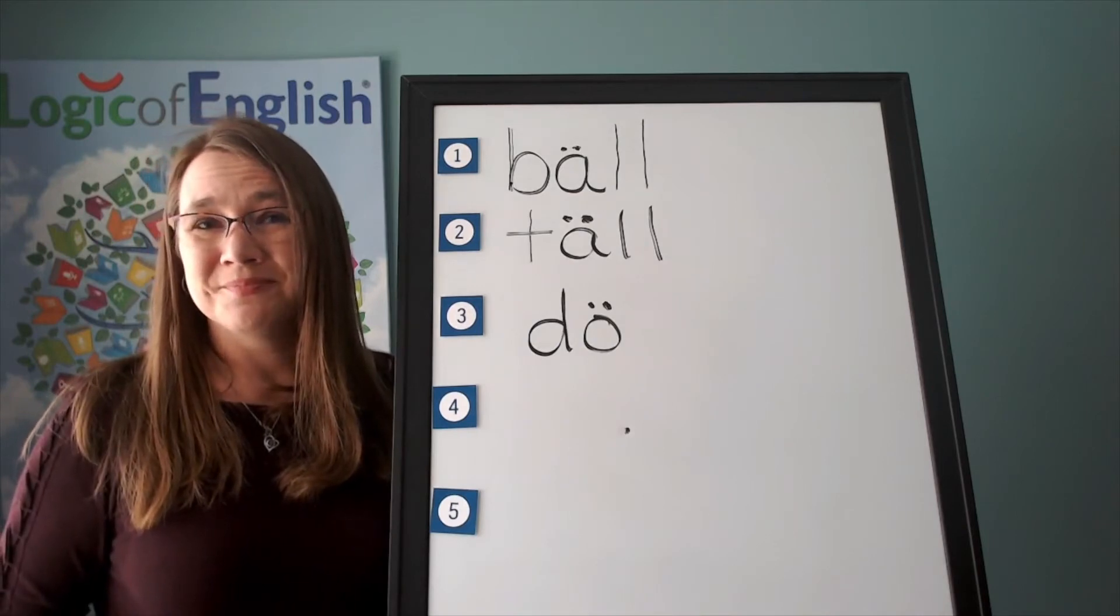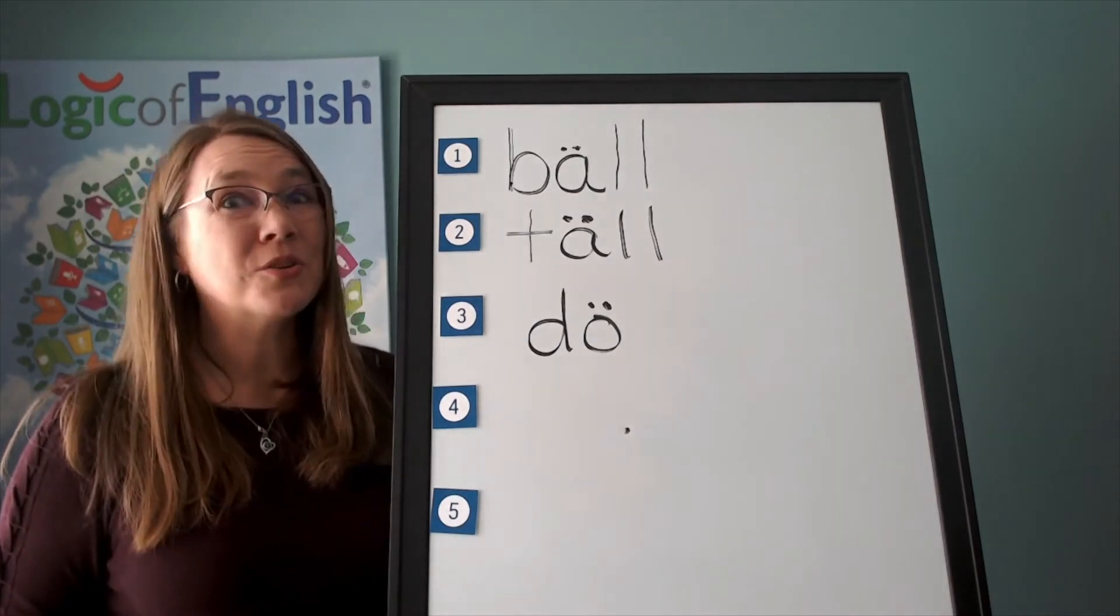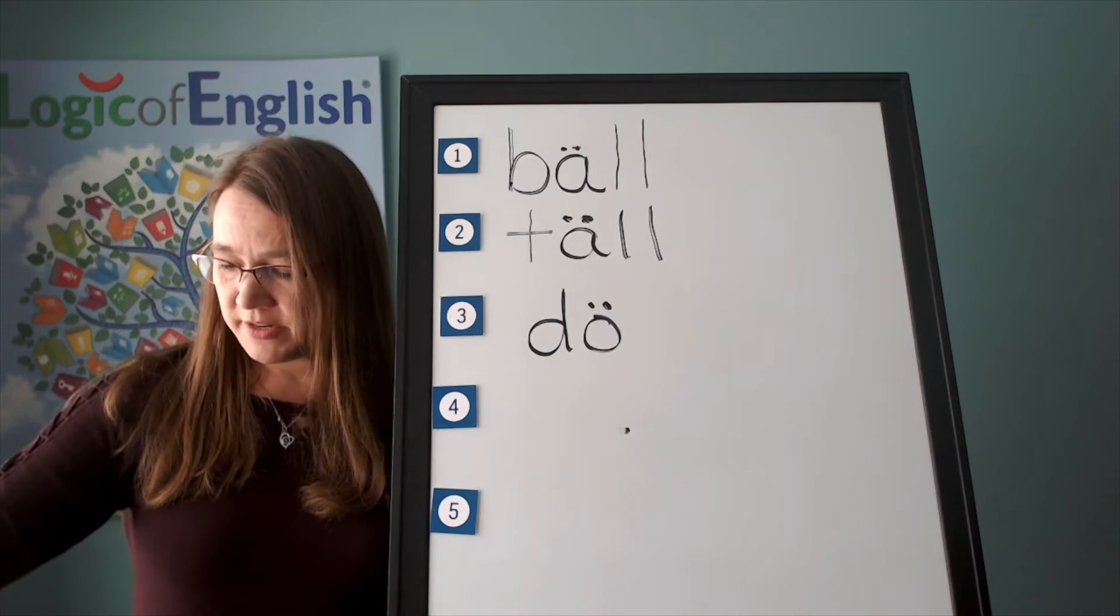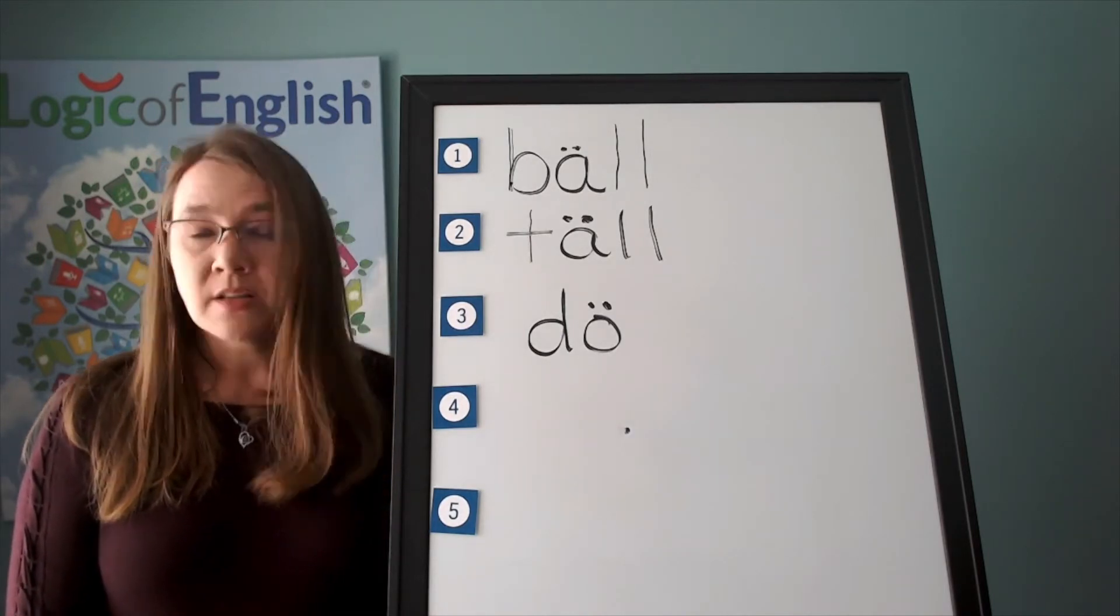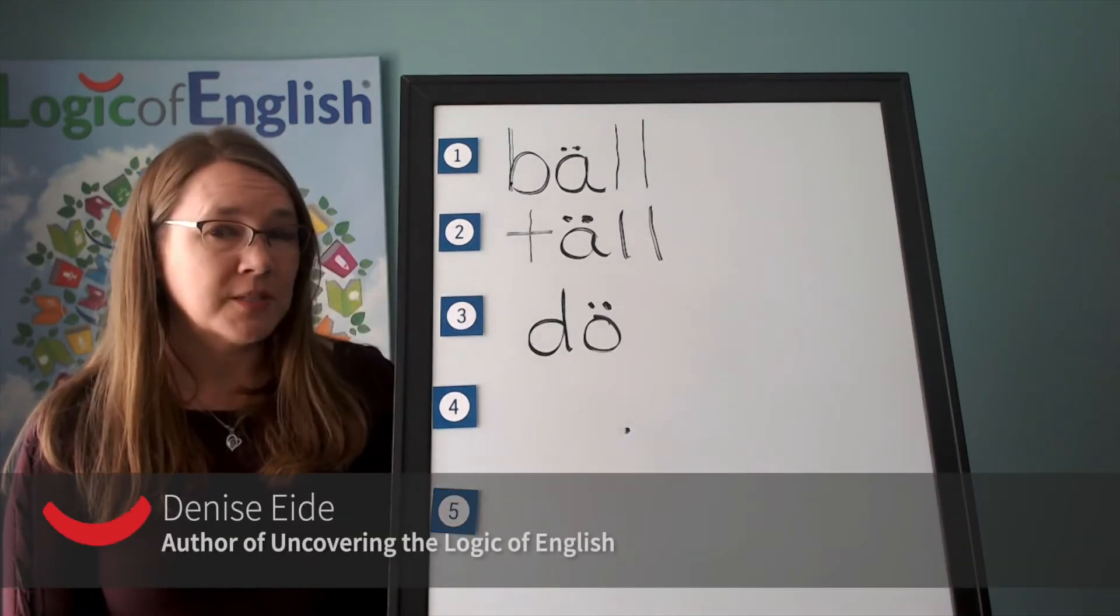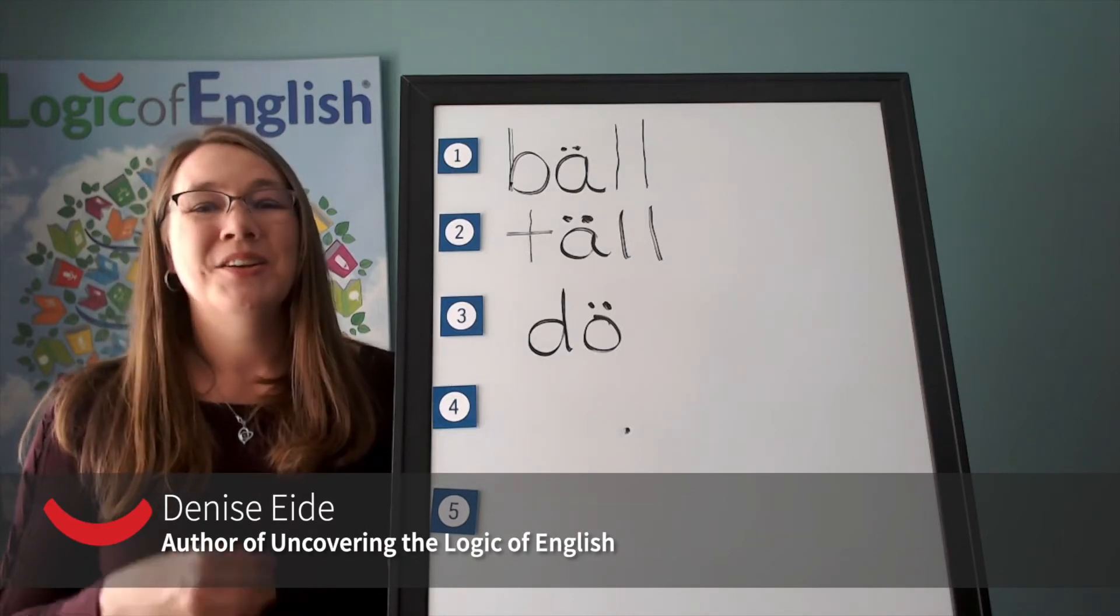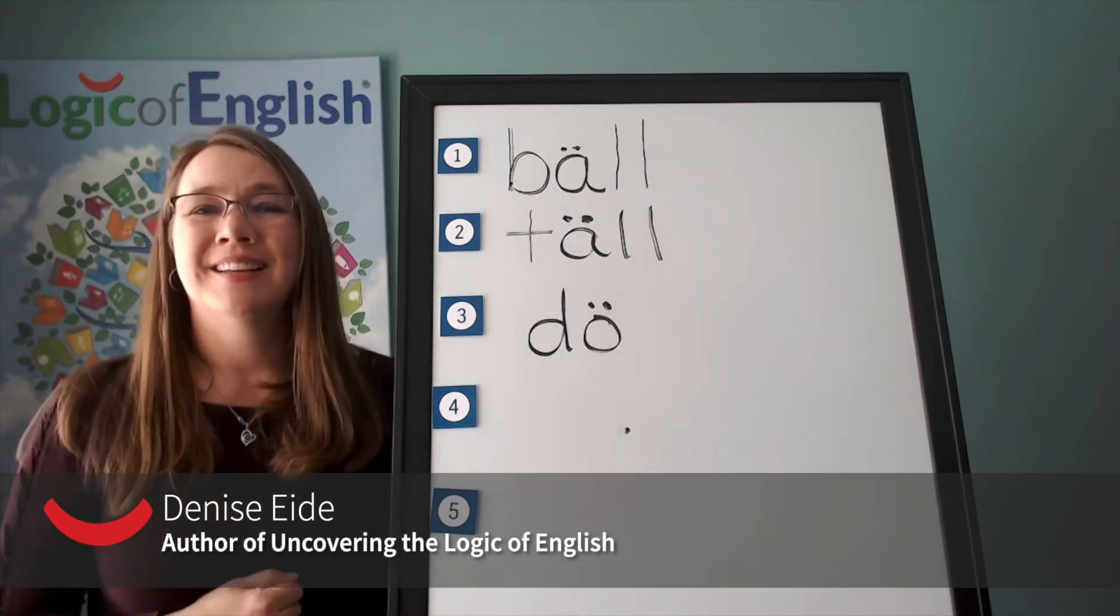Do you remember another word we had recently like do where O, oo was at the end? That's right. We recently learned the word two. Very good. The next word is tray. The tray has two cups on it. Tray. Go ahead and say tray.